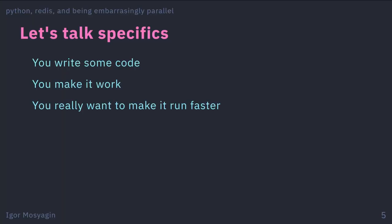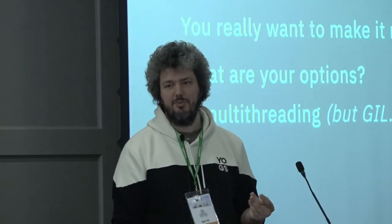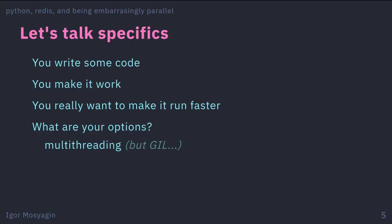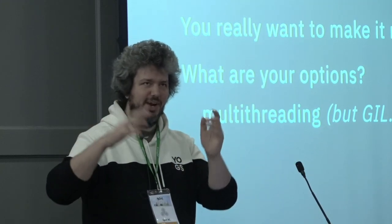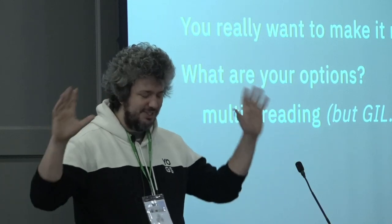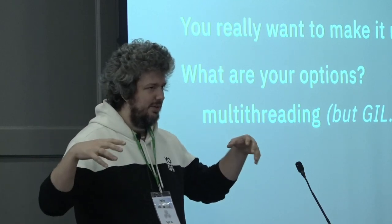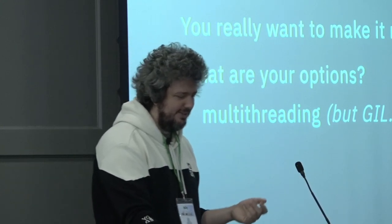Imagine you write some code, make it work, and you really want to make it run faster. You can try multithreading, but then you hear that Python has the GIL, so multithreading won't work as expected. It's kind of true, kind of not — there's a lot happening in this field, especially since Python 3.11. But often you spend a couple of days trying to make your code faster and in the end it runs the same. Very annoying.